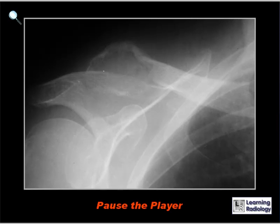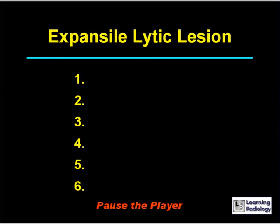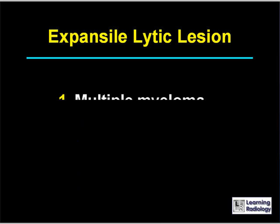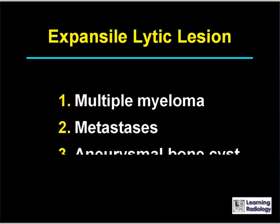Here's the next differential diagnosis. The differential is for an expansile lytic lesion of bone. There are six major causes.